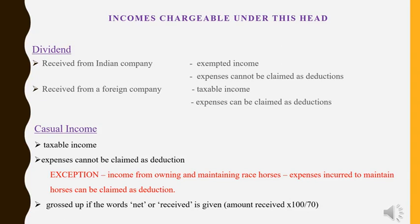For taxation purposes, dividend is divided into two types: dividend received from an Indian company and dividend received from a foreign company. Dividend received from an Indian company is exempted income — you need not bring it to tax at all, and expenses cannot be claimed. On the other hand, dividend received from a foreign company is taxable income and expenses can be claimed as a deduction. To summarize: Indian company — exempted, expenses cannot be claimed; foreign company — taxable, expenses can be claimed.